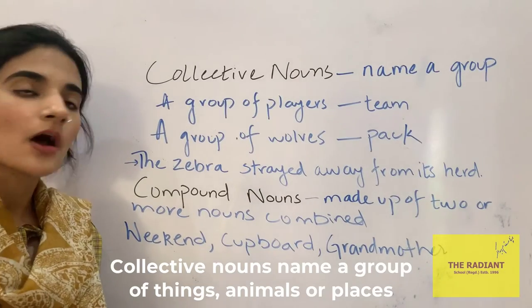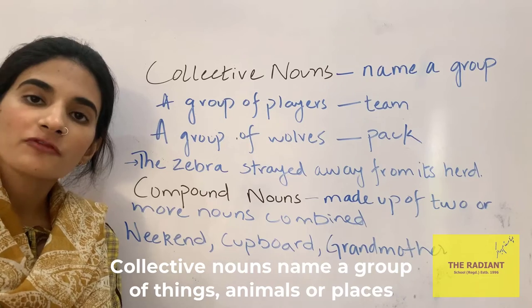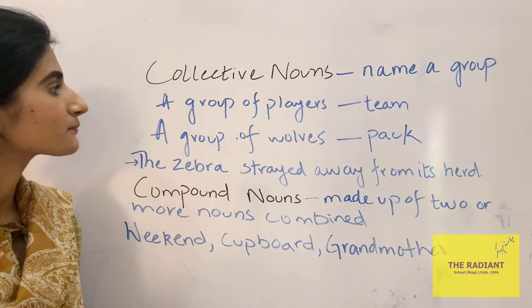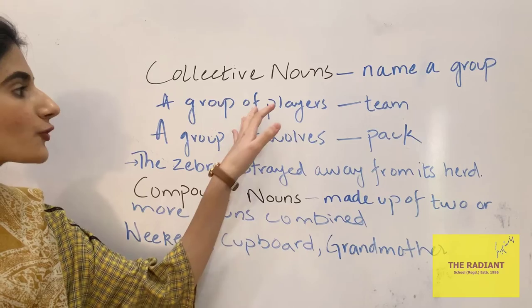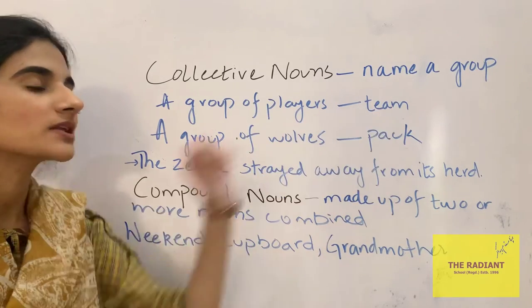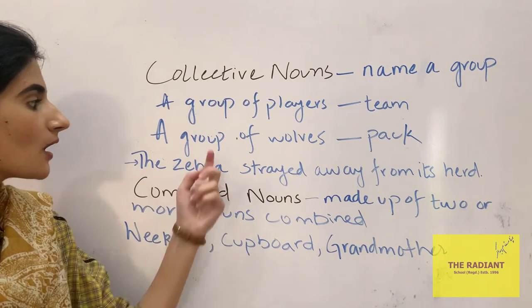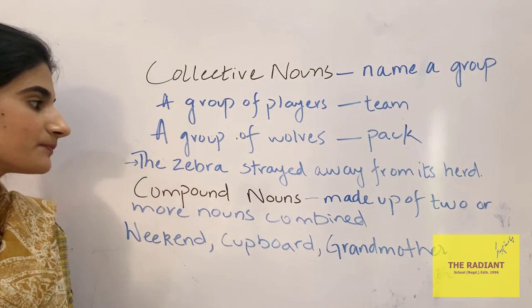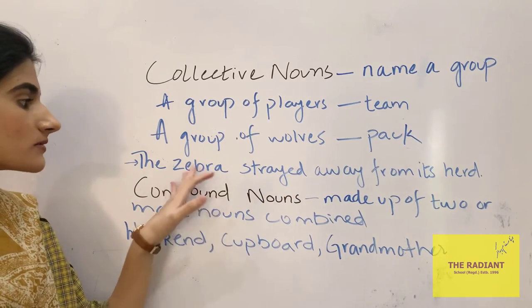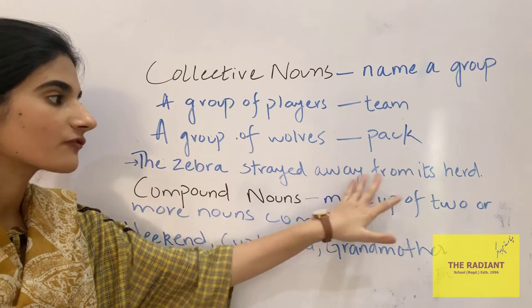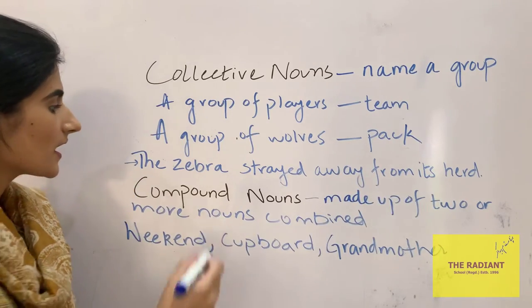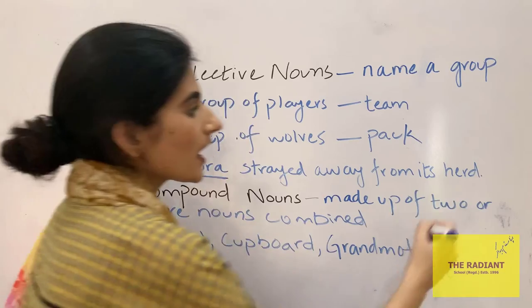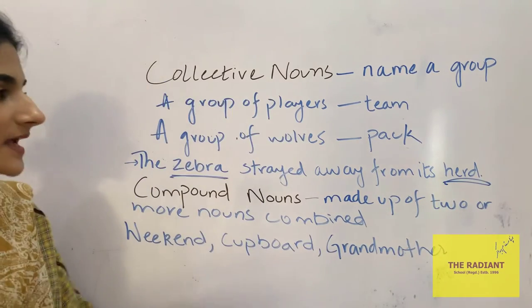A collective noun names a group of things, animals or places. A group of players is called a team. A group of wolves is called a pack. The zebra strayed away from its herd — here, zebra is a common noun and herd is a collective noun.